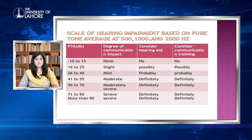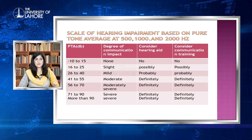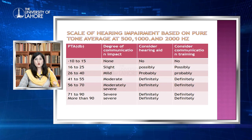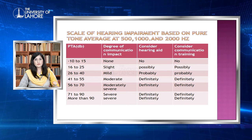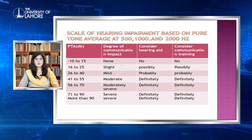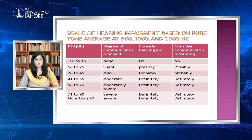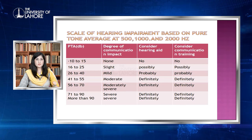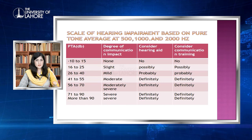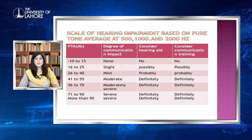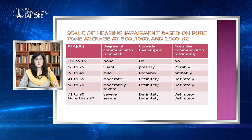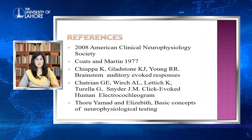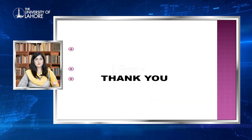The clinical findings based on PTA are: 0–15 dB is normal hearing with no hearing aid needed; 16–25 dB is slight hearing loss; 26–40 dB is mild hearing loss — hearing aids are generally not considered at this stage; 41–55 dB is moderate hearing loss where the patient may need a hearing aid; 56–70 dB is moderately severe hearing loss where a hearing aid is definitely needed; and 71–90 dB or above is severe to profound hearing loss requiring a hearing aid. We will discuss bone conduction audiometry in the next lecture. Thank you.